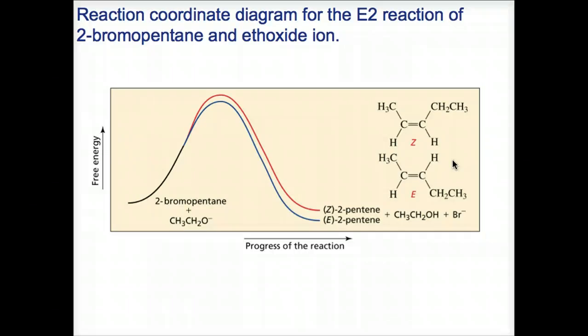As shown in the reaction coordinate diagram on this slide, for the E2 reaction of 2-bromopentane with an ethoxide ion, the more stable alkene has the more stable transition state, and therefore is formed more rapidly.